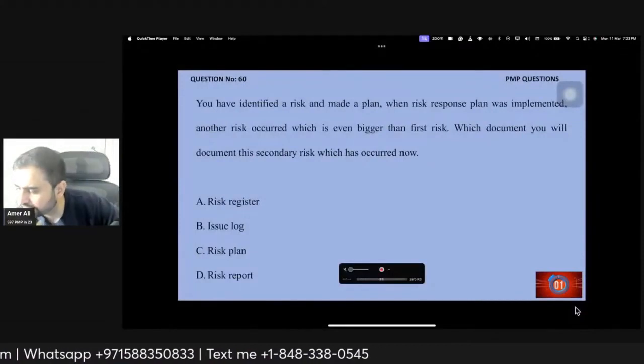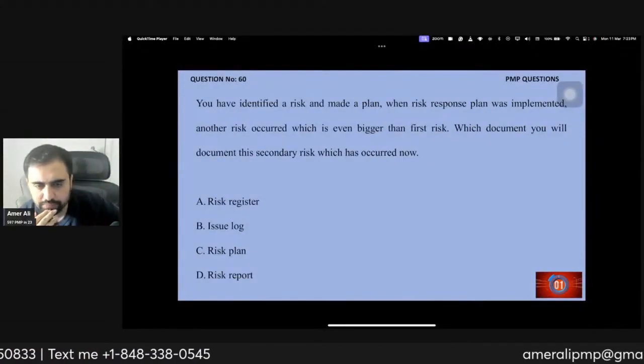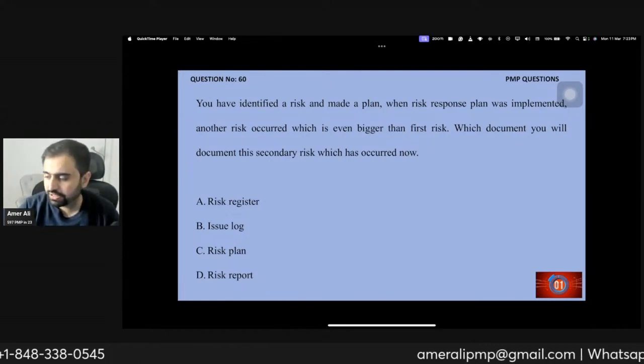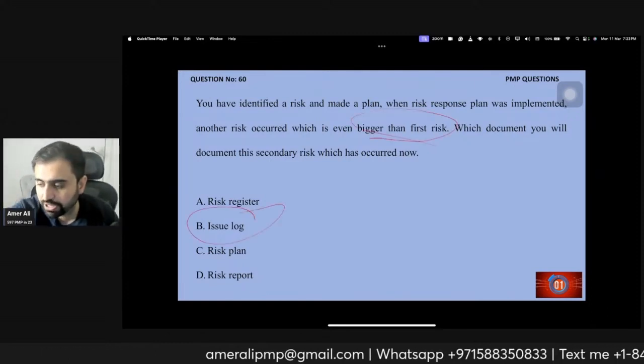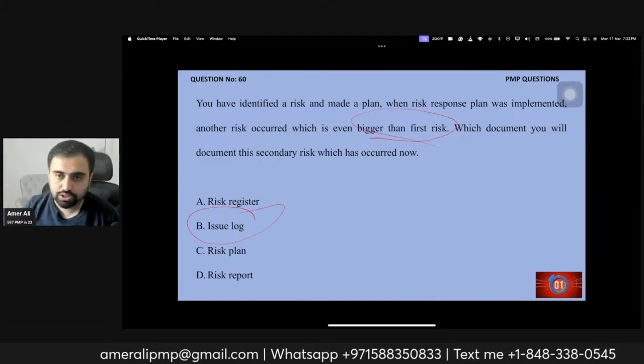You have identified a risk, made a plan. When the risk response was implemented, another risk occurred which is bigger than that. So you don't have a plan for something. We discuss: if you don't have a plan, that thing straight goes to the issue log.